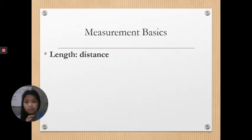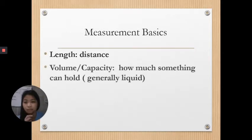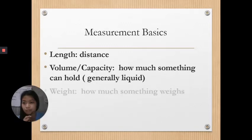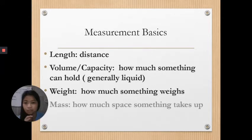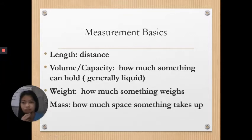In measurement basics, we have length, which measures distance. For volume and capacity, it is how much something can hold, generally liquid. Next is weight, how much something weighs. And for mass, how much space something takes up. Weight tells how much something weighs, while mass is how much space something takes up.